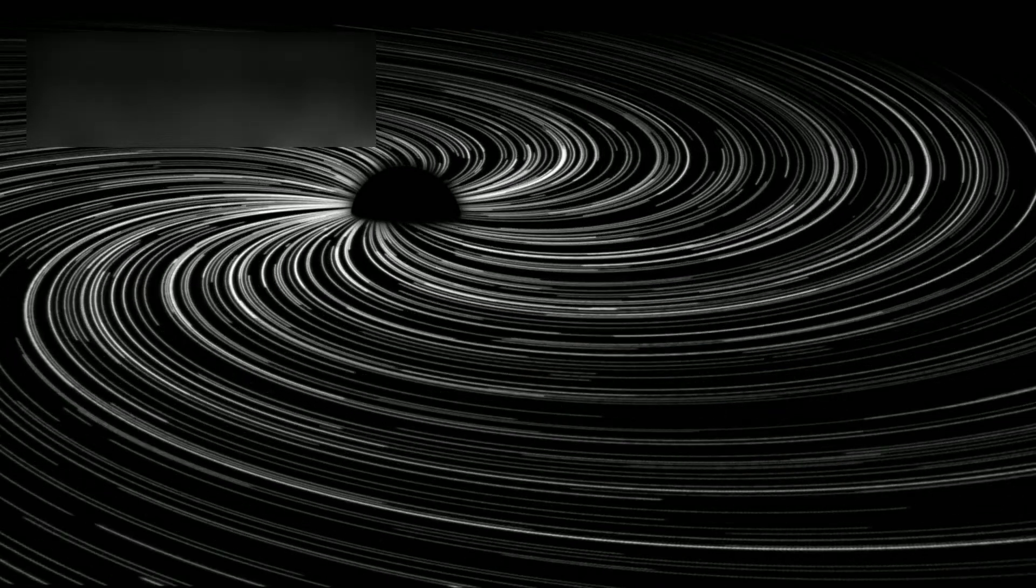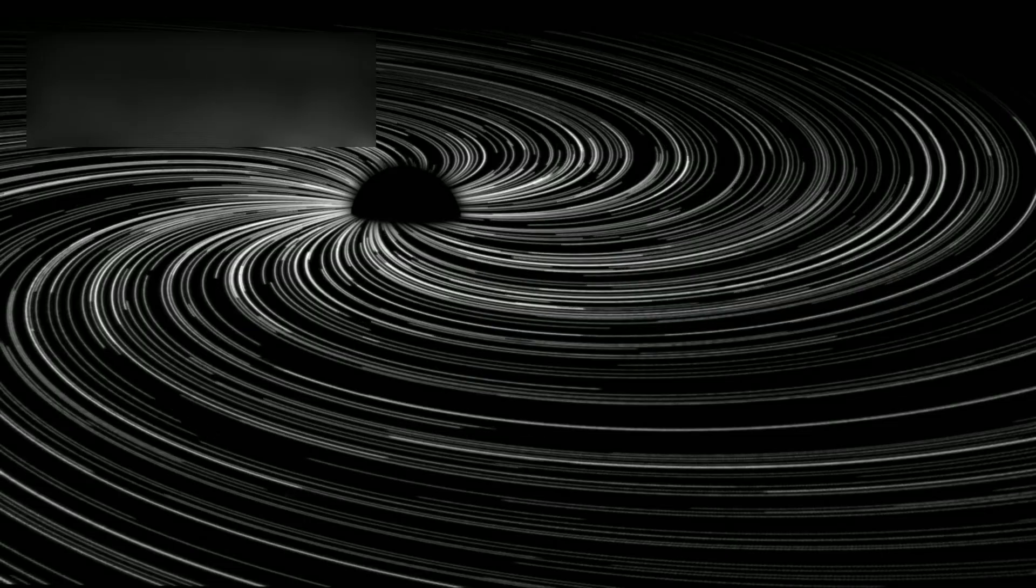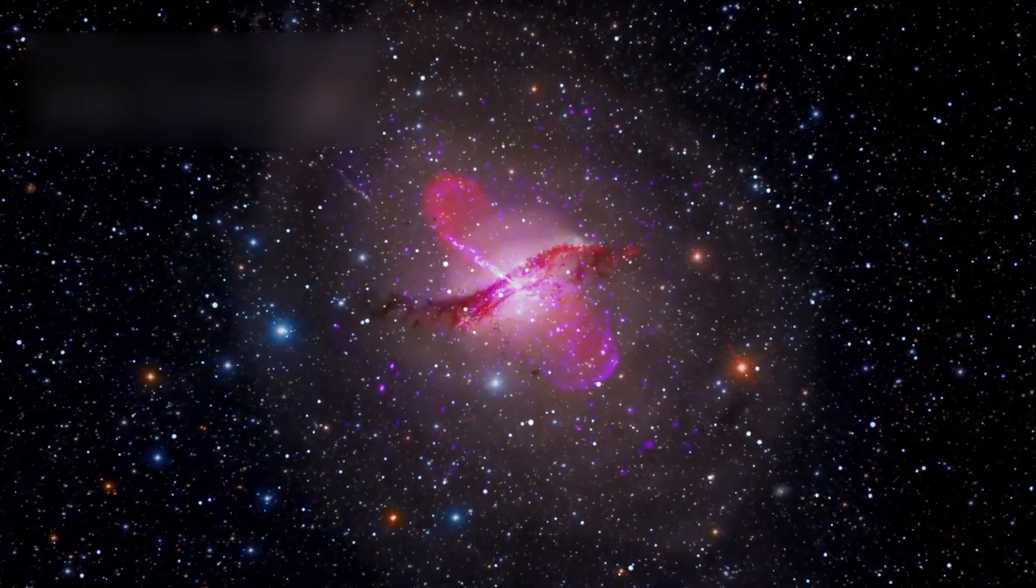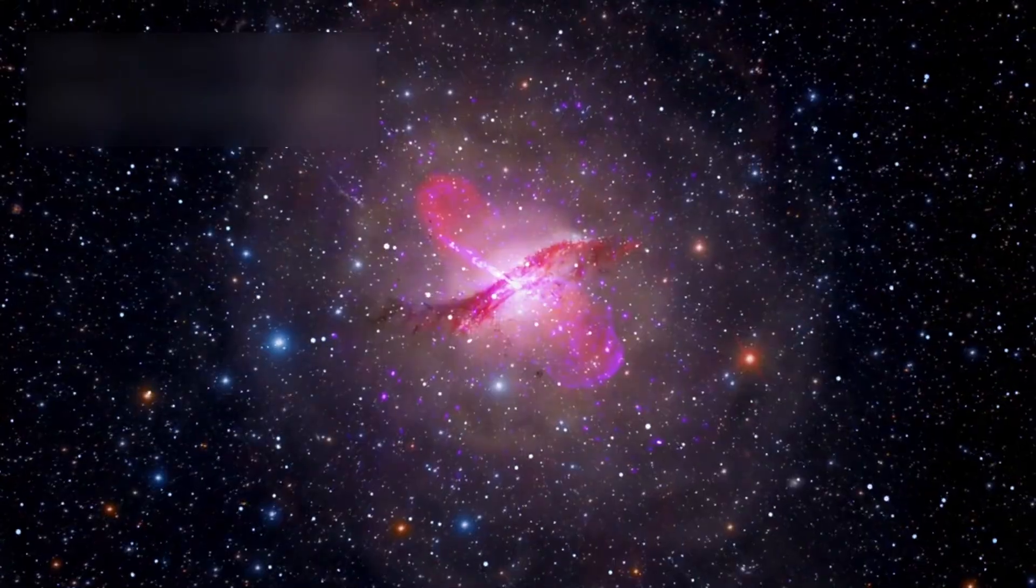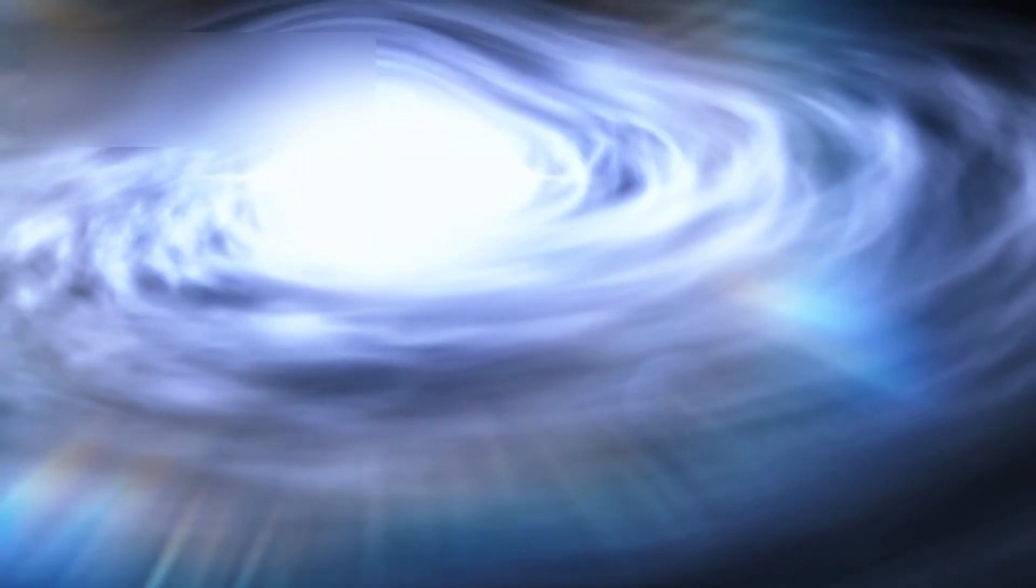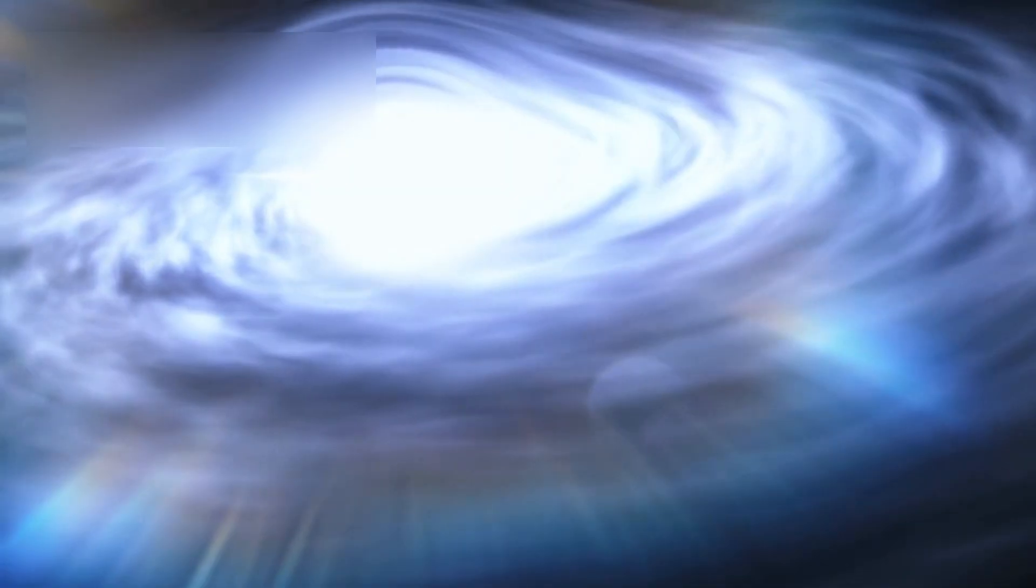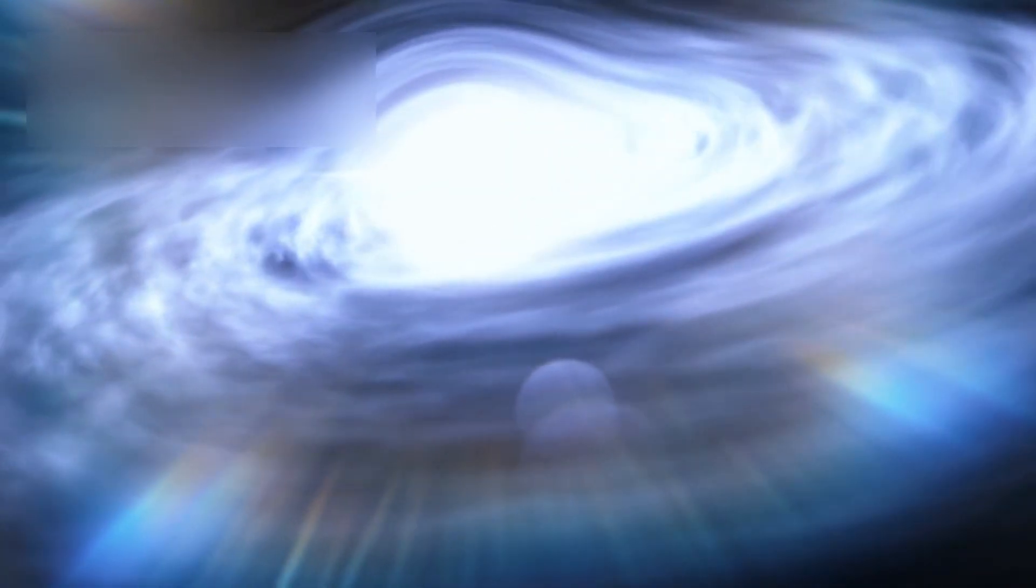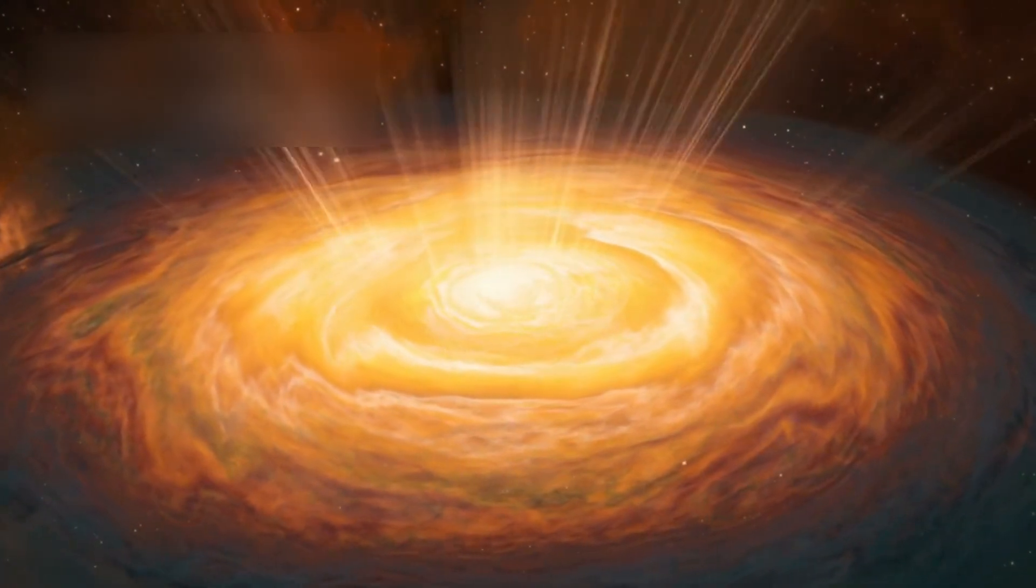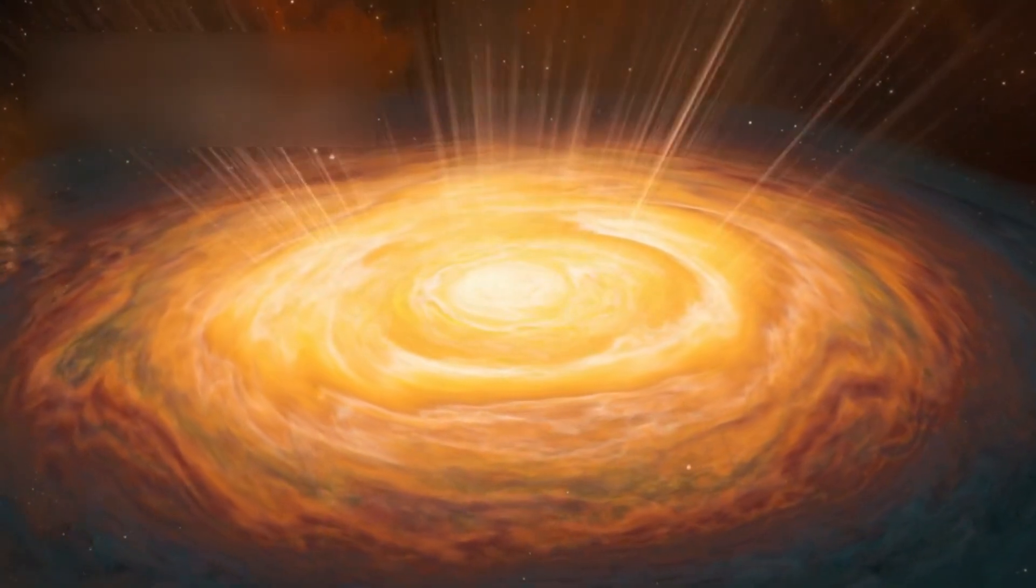These invisible giants shape the structure of galaxies, regulate star formation, and can unleash jets of energy so powerful they stretch across thousands of light-years. And then there are quasars, among the brightest and most energetic objects in existence. Powered by matter spiraling into supermassive black holes, quasars can outshine entire galaxies. They are beacons from the early universe, their light traveling billions of years to reach us, offering rare glimpses into the universe's ancient past.